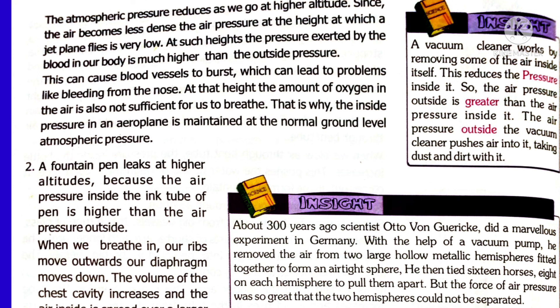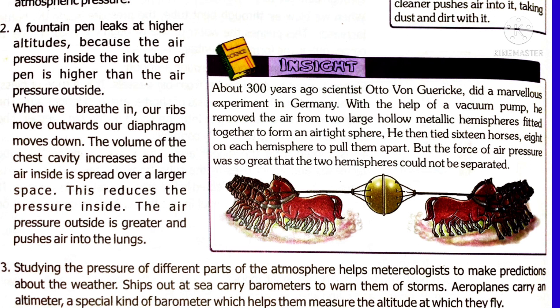Also, at high altitude the number of oxygen particles in the air is less, so it is difficult to breathe — that is why we carry an oxygen cylinder. The inside pressure of an aeroplane is maintained at normal ground-level atmospheric pressure; if such maintenance is not done, passengers would face bleeding and many other problems. When we use a vacuum cleaner, the air pressure inside it is reduced below the outside air pressure. Thus, outside air pressure is more and pushes air particles and dust particles into the cleaner, which is how it cleans the area.